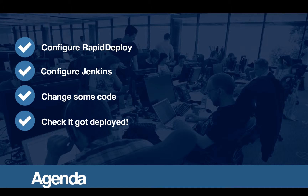Today we're going to follow four steps in the agenda. We're going to configure Rapid Deploy — we already have it running with the WebSphere project from last time. We're going to add another project to pull the EAR file from Jenkins into Rapid Deploy. We could have configured Jenkins to do the push, but we've done it the other way around. Then we'll configure Jenkins to add the Rapid Deploy plugin steps to our job for continuous delivery. Finally, we'll change some code in our Subversion repository, have that automatically run our build and deployment, and then check that it got deployed.